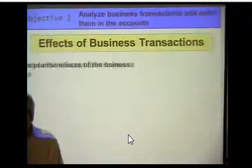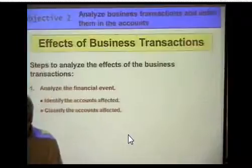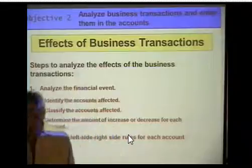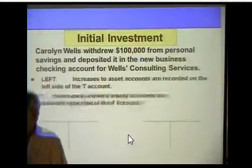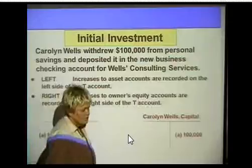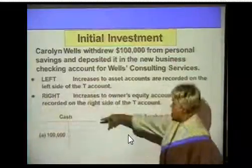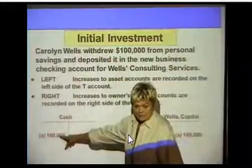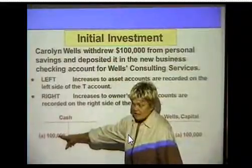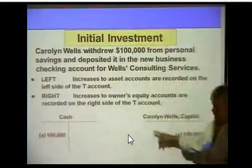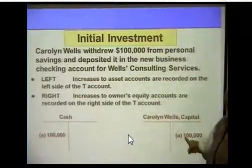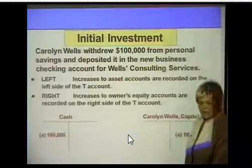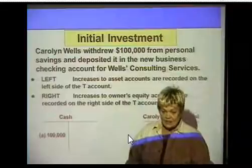We're going through and entering our transactions, which we did over several days. We analyzed them just like we did in Chapter 2. Here we are with our first one — she withdrew the money, so it increased the asset accounts. We show the left side entry for assets because it increased, and on the right side it increased capital, so capital's on the right side. Every transaction has a left side and right side entry in some account.